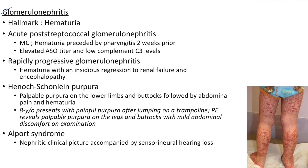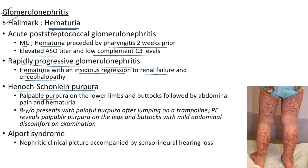Glomerulonephritis: hallmark is hematuria. Most common cause is acute post-streptococcal glomerulonephritis — hematuria preceded by pharyngitis two weeks prior, elevated ASO titer, and low complement C3 levels. Rapidly progressive glomerulonephritis: hematuria with rapid regression to renal failure and encephalopathy. Henoch-Schönlein purpura: palpable purpura on the lower limbs and buttocks followed by abdominal pain and hematuria.